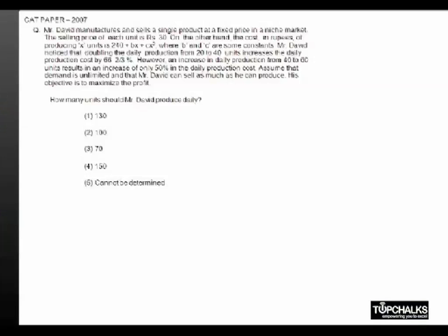In this question, David manufactures and sells objects at 30 rupees with a given cost function. We have data about cost changes when production increases from 20 to 40 units and from 40 to 60 units. We want to find the maximum profit.